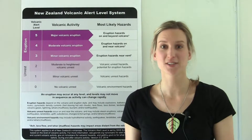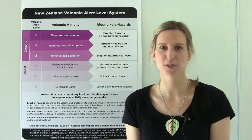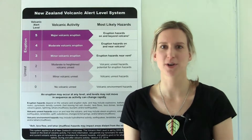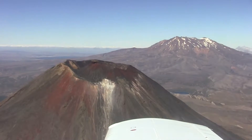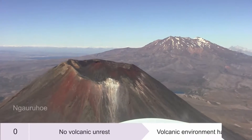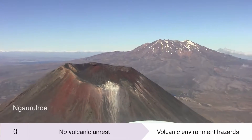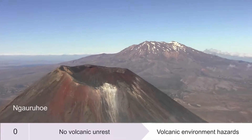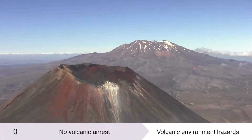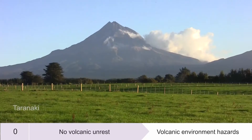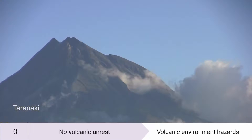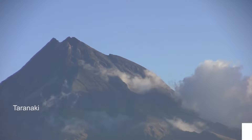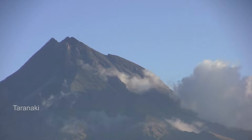So let's look at some examples of volcanoes showing activity at each of these levels. A volcano at alert level zero is a volcano where nothing is happening — we just have the typical environmental hazards and there are no volcanic hazards at that volcano.